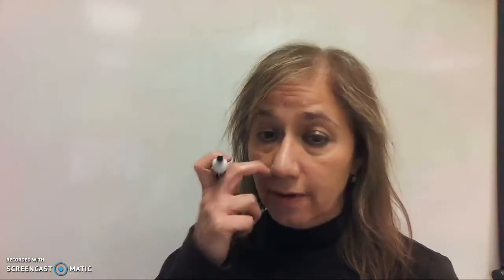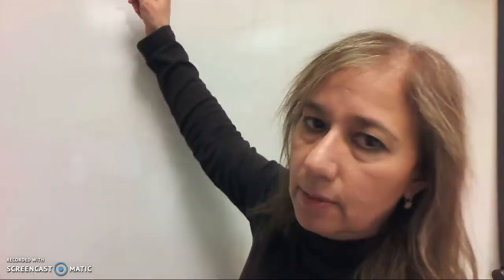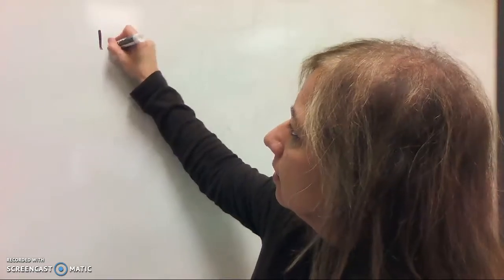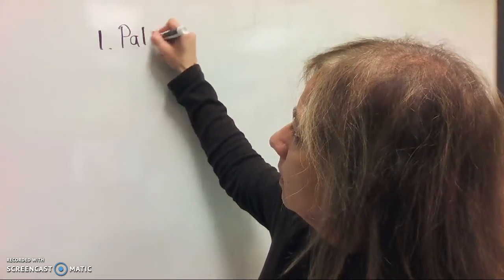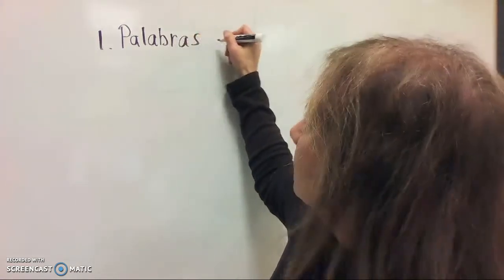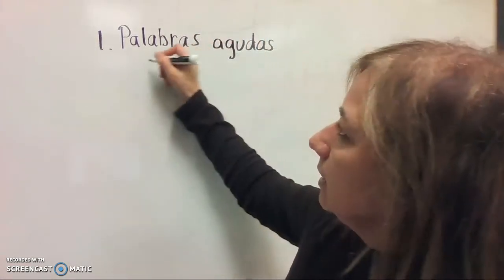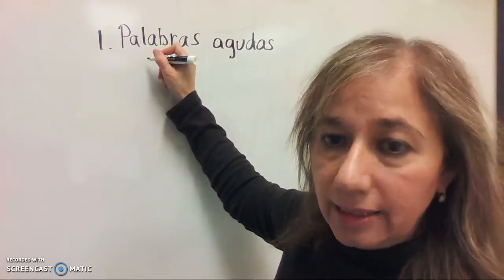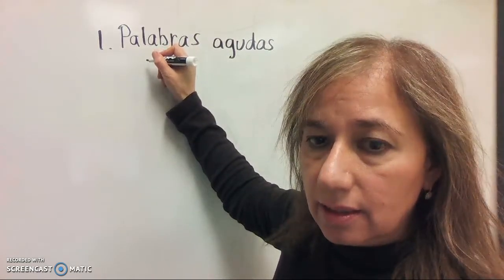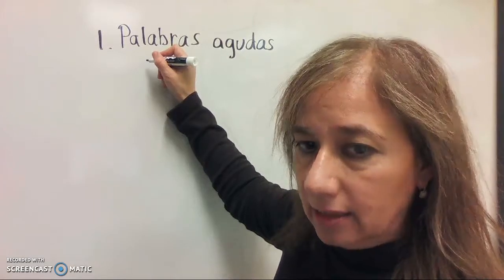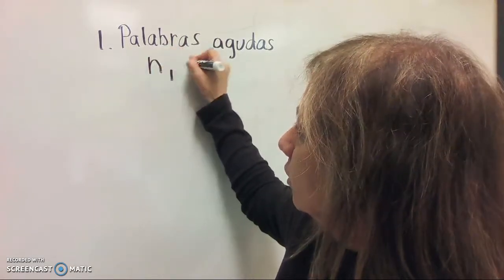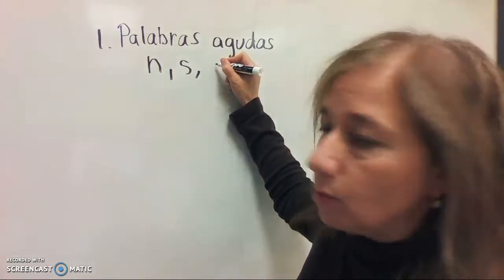We're going to go over the palabras agudas, graves or llanas, and esdrújulas. The first one is the palabras agudas. They take an accent if they end in N, S, or a vowel.